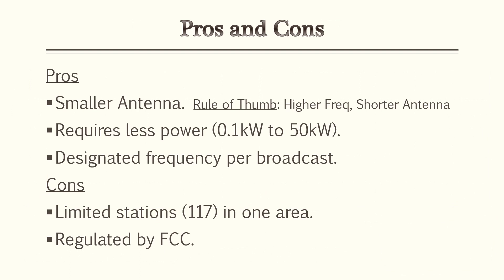Let's go over the pros and cons of amplitude modulation. As stated earlier, it requires a smaller antenna than broadcasting at very low frequencies. The general rule of thumb is: the higher the frequency, the shorter the antenna. It also requires substantially less power. Additionally, having designated carrier frequencies — like the street addresses shown earlier — means broadcasts don't jumble together. Each station has its own designated frequency.